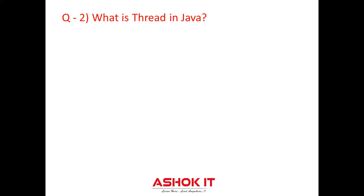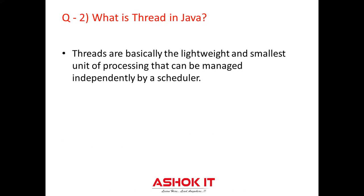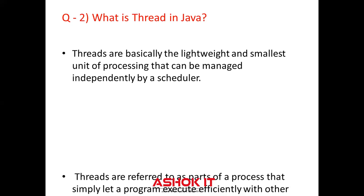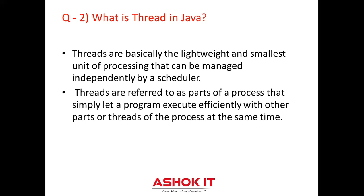Question two: What is a thread in Java? Threads are basically the lightweight and smallest unit of processing that can be managed independently by the scheduler. The threads are referred to as a part of a process that simply lets a program execute efficiently with other threads of the process at the same time. Using threads, one can perform a complicated task in the easiest way. It is considered the simplest way to take advantage of multiple CPUs available in the machine. They share the common address space and are independent of each other.